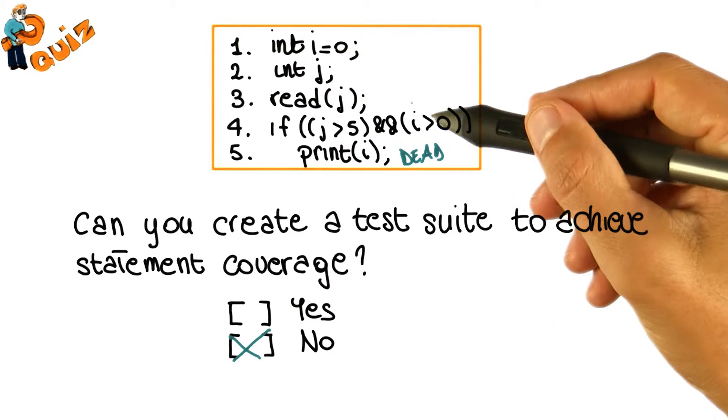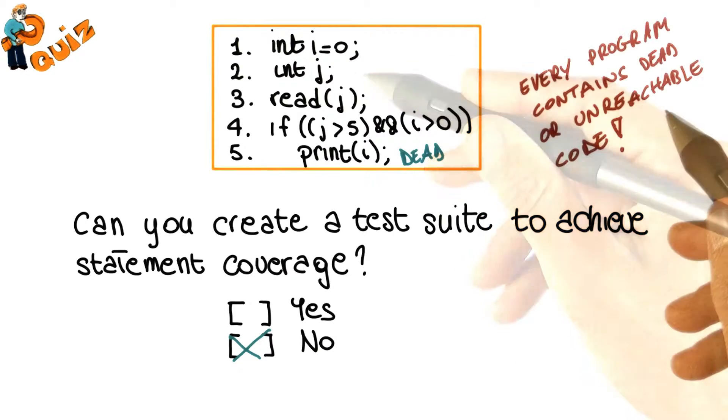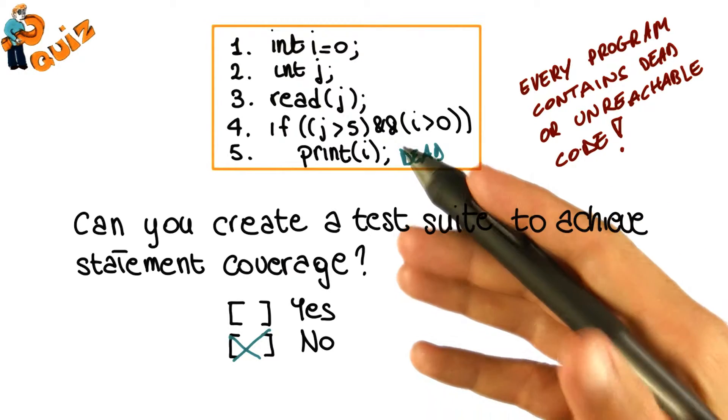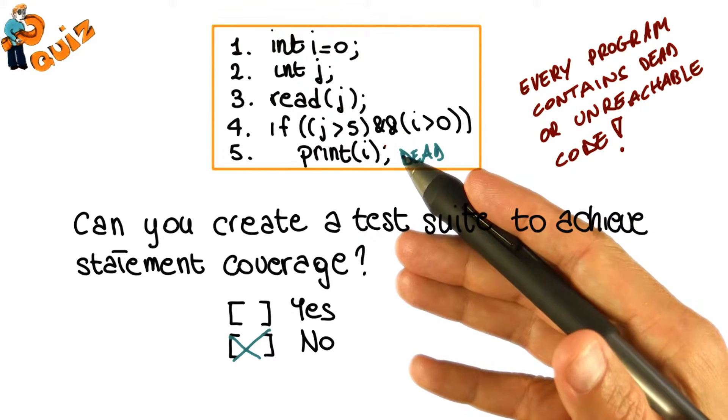And notice that this is a small example. But another important truth is that any non-trivial program contains dead or unreachable code. Code that no matter how well we test our system, we will never be able to exercise.